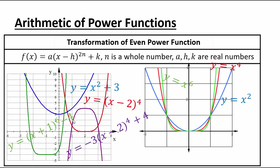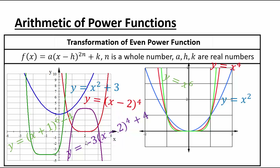If you have a number in front, say negative 3 times x minus 2 to the 4th plus 4, the x minus 2 shifts it to the right 2, the negative 3 reflects it across the x-axis and applies a vertical stretch by a factor of 3, and the plus 4 takes it up 4. Transformations of even functions retain the basic shape, with horizontal shifts, vertical shifts, or vertical stretch and compressions.